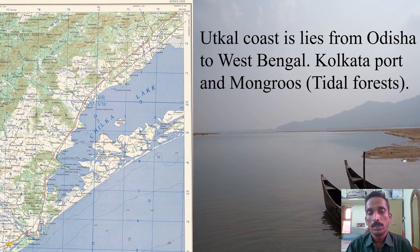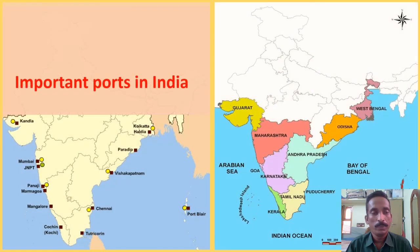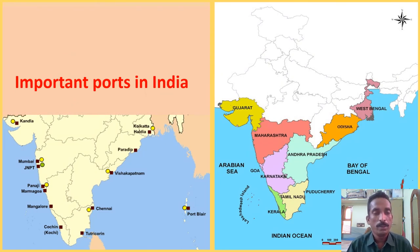The Coromandel Coast continues from Odisha to West Bengal. Kolkata port is one of the most important ports in this region, and the area features mangroves — a tidal forest ecosystem.